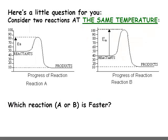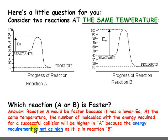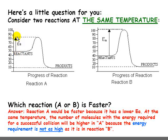Here's a little question: which reaction would be faster? The answer is reaction A would be faster. It has a lower activation energy. At the same temperature, the number of molecules with the energy required for a successful collision will be higher in A because the energy requirement is not as high as it is in reaction B.